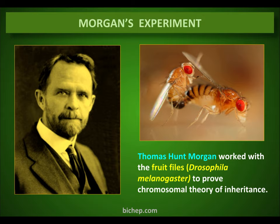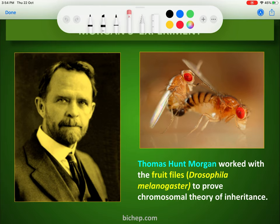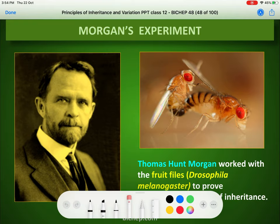Let us move further ahead with Morgan's experiment, which is actually an advanced proof of the chromosomal theory of inheritance. Variation in the form of crossing over is proved by Morgan, and here we are going to learn the mechanism of how Morgan proved those facts. The principle of variation and the principle of recombination were the discovery of Morgan, and it is known as Morgan's experiment.